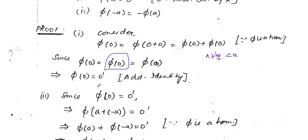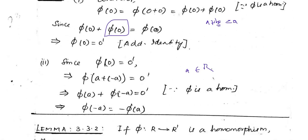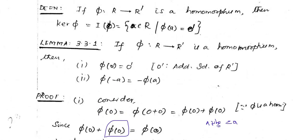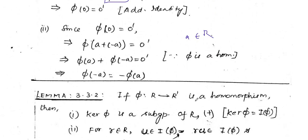For the second part, we make use of the first property. Since phi of 0 is 0 prime, we can write 0 as a plus minus a for any a in R. Because phi is a homomorphism, phi of 0 equals phi of a plus phi of minus a equals 0 prime. Applying the additive inverse on both sides, we get phi of minus a is minus phi of a. These two properties — preserving identity and inverses — also hold in the group homomorphism case.